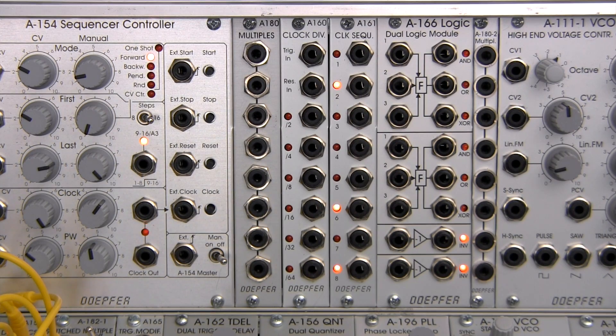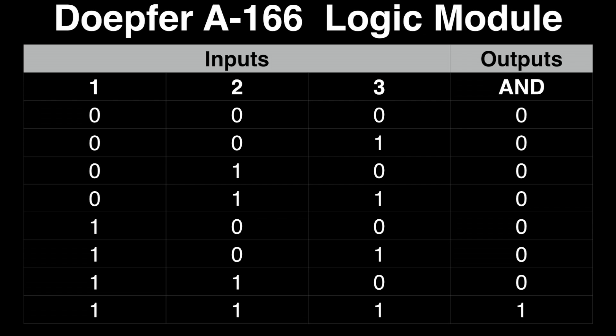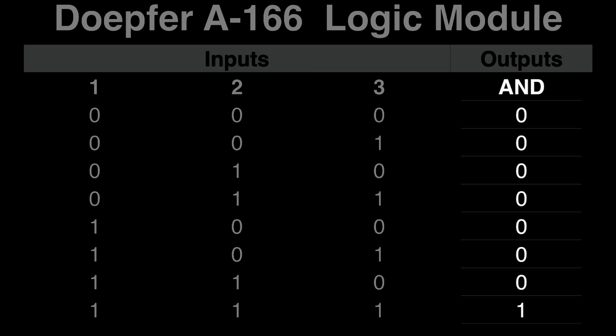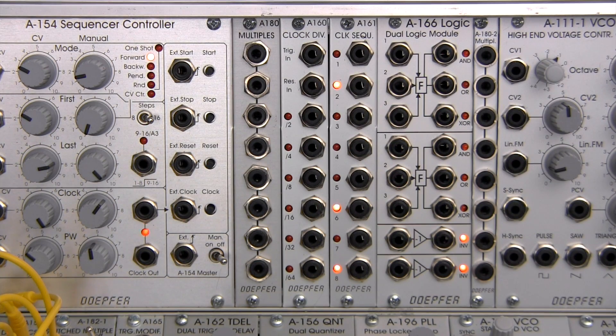We'll start with the AND function. Starting with the first row, if all three gates are low, then the AND output will be low, or zero. If inputs one and two are low and three is high, then your output is low. You should see a pattern emerging by examining the AND column — in all cases, the AND output will be low unless all three inputs are high. The LED on the panel will let you know when this occurs, right here.